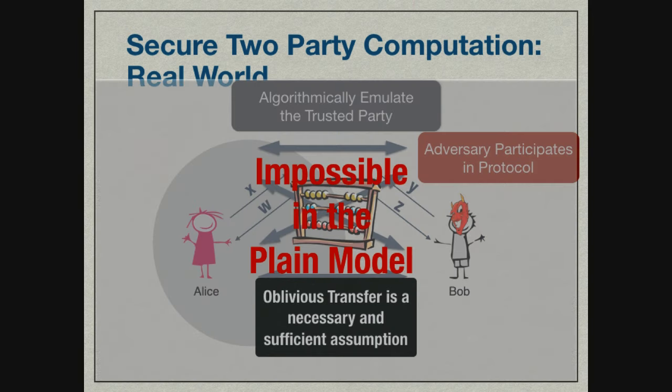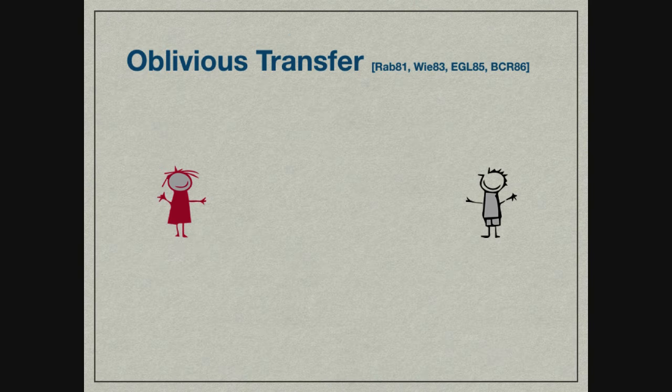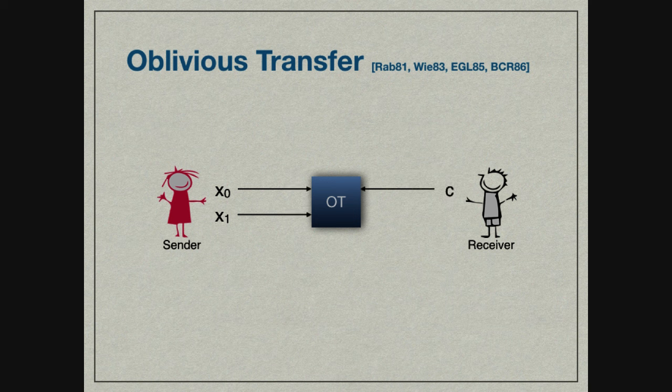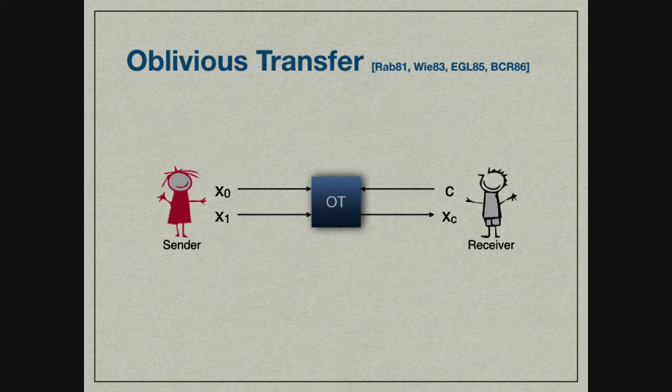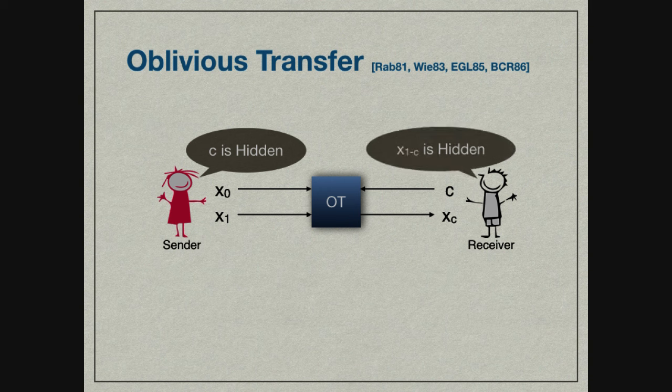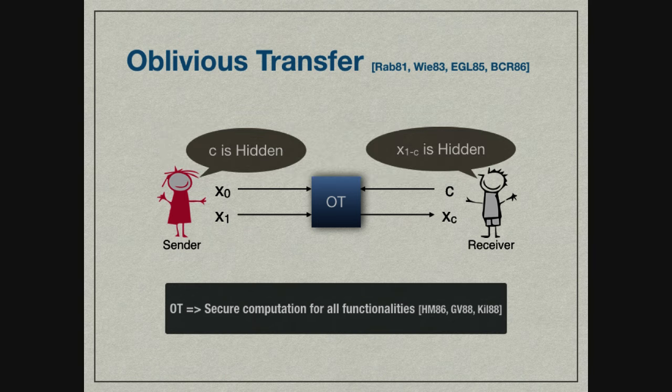This turns out to be impossible in the plain model. Oblivious transfer is a necessary and sufficient assumption to perform secure 2PC or MPC in general. In OT, the sender has inputs x0 and x1, the receiver has a choice bit which helps choose one sender input as output. The security guarantee is that the sender doesn't learn the receiver's choice bit, and the receiver doesn't learn the other sender message.